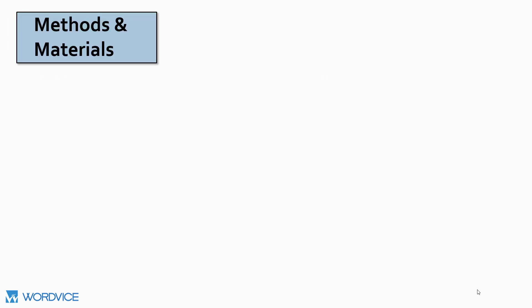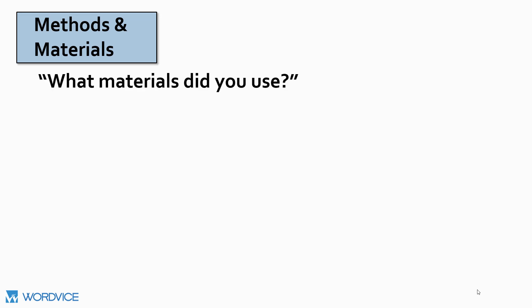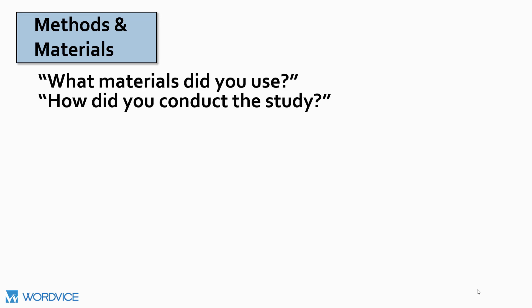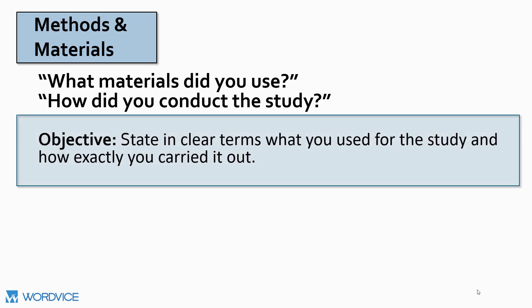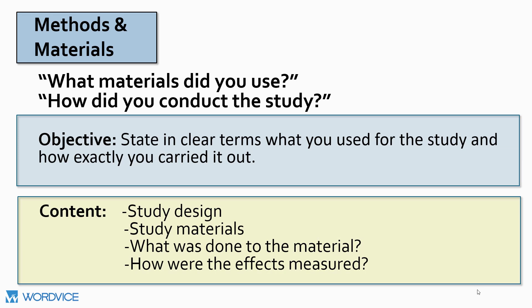The next section of the research paper is the methods and materials. In this section, you are asked: what materials did you use, and how did you conduct this study? The purpose of this section is to state in clear terms what you used for the study and how exactly you carried it out. For content, you should include study design, study materials, what was done to the material, and how the effects are measured. The methods and materials is the leanest part of the research paper, as it only focuses on the very specific details of how your study was carried out.